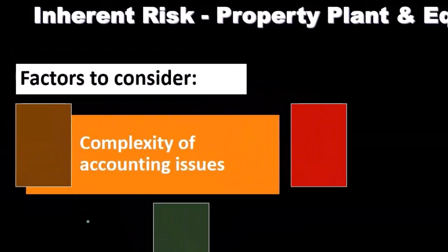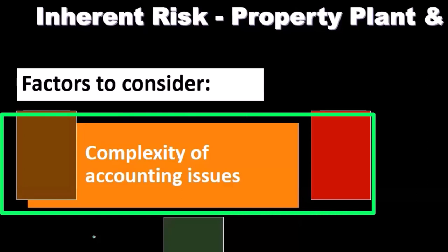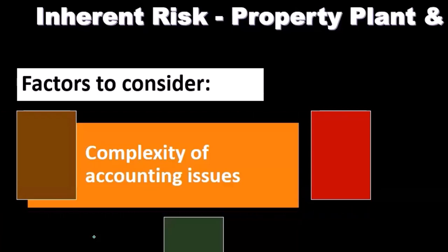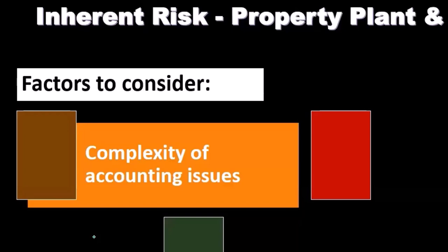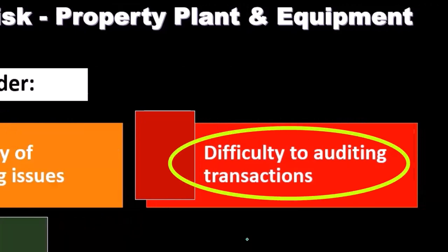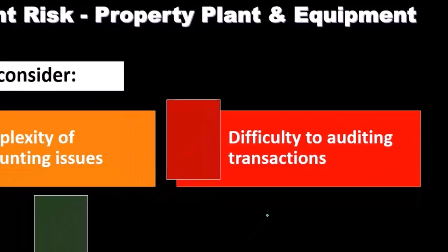The complexity of the accounting issues is one inherent risk factor to consider for PP&E. Because these involve larger dollar amounts, they could be material, and some transactions — such as a capital lease — can be more complex and difficult to evaluate. We also want to consider how easy it will be to audit these transactions: do we have all the necessary documentation?